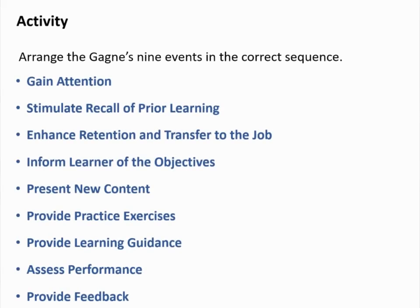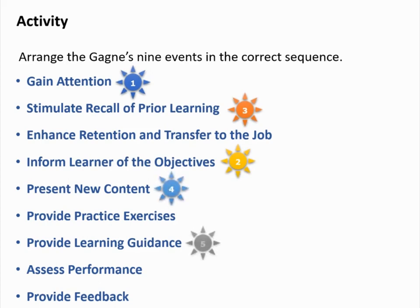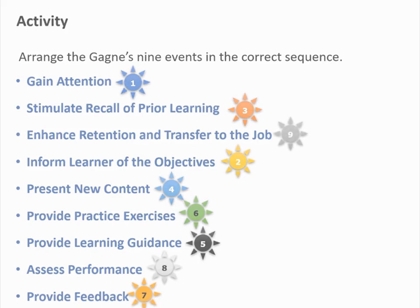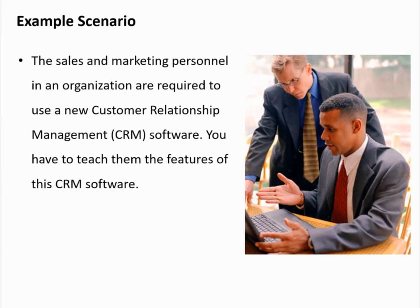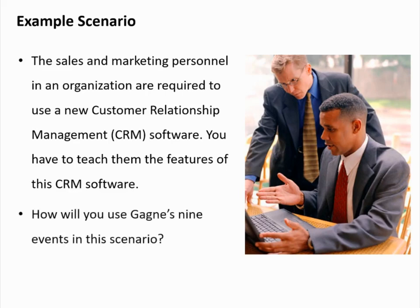Now that we've reviewed Gagné's 9 events, let's learn more about them through an example. The sales and marketing personnel in an organization are required to use a new customer relationship management (CRM) software. You have to teach them the features of this CRM software. How will you use Gagné's 9 events in this scenario?